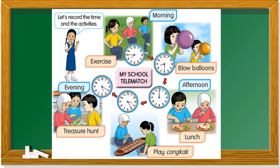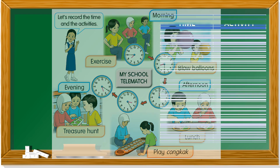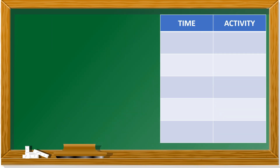Let's take a look at these activities during my school telematch. How many activities are there? There are five. Let us record the time and the activities. We can record them in a table like this.